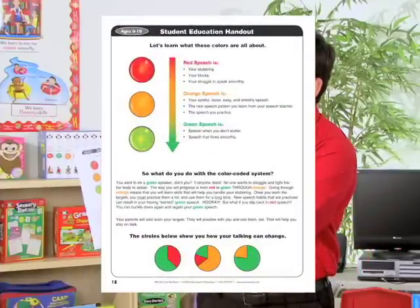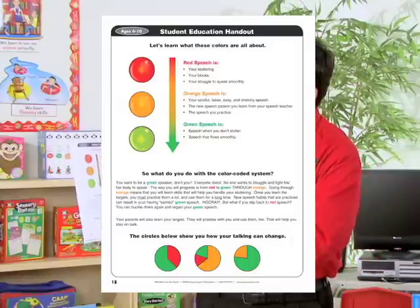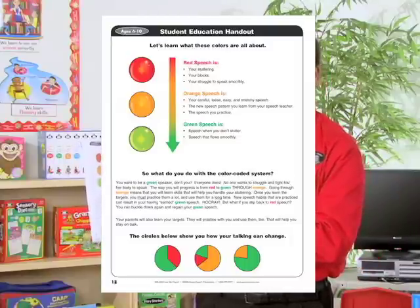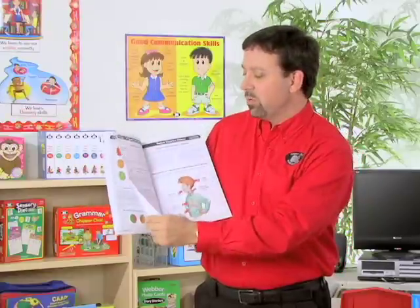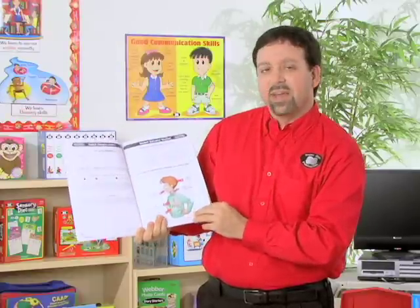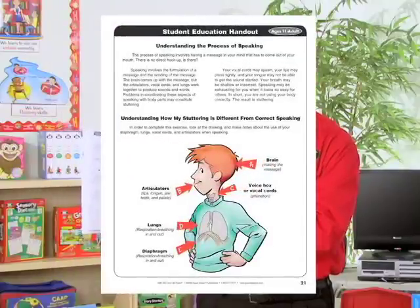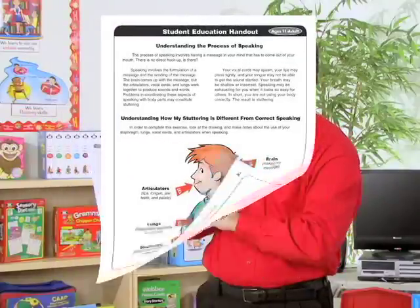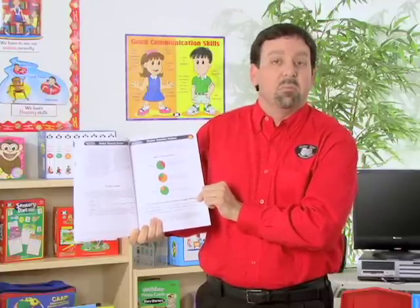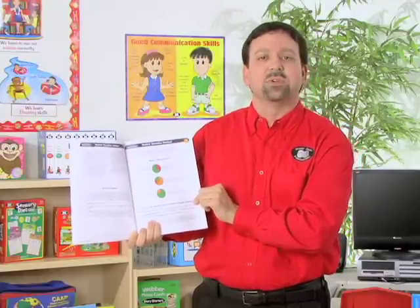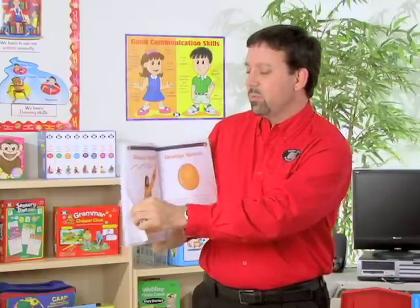We also learned that we're trying to go from red speech down to green speech. Students also identify their goals — what they want to achieve from this program. We have educational handouts covering what the body does and what happens when a student experiences stuttering behavior. Speech therapy time is indicated here, covering the process for targeting those skills and the length of time we work with them.